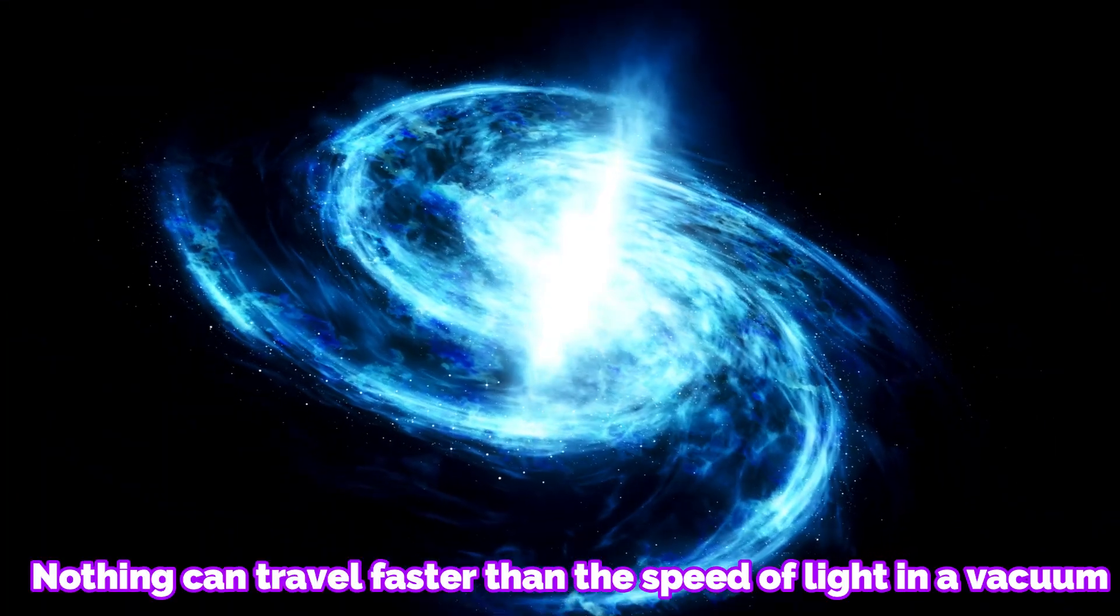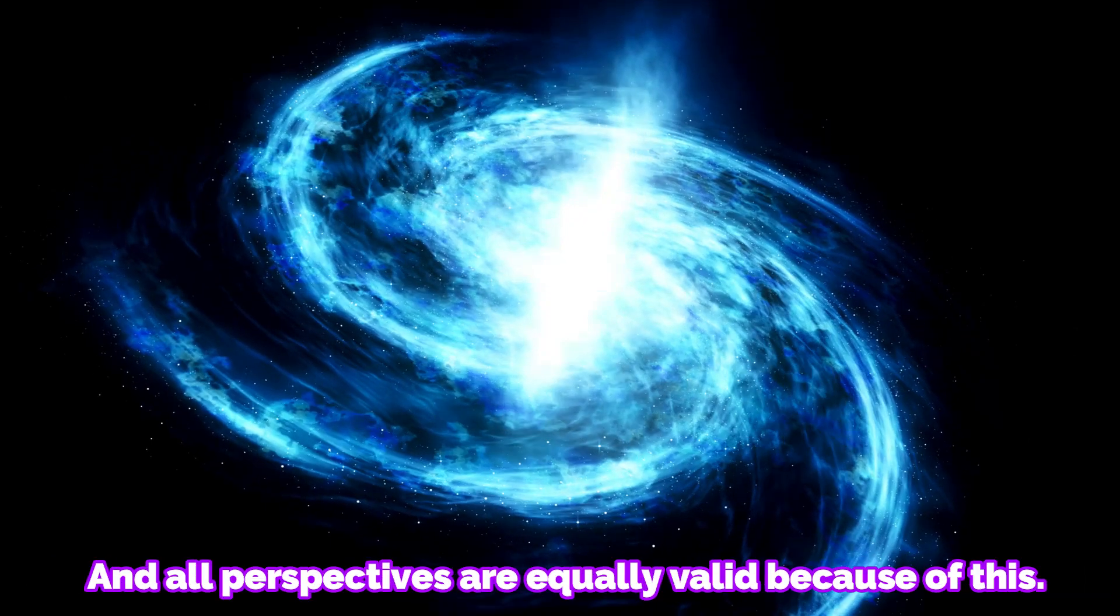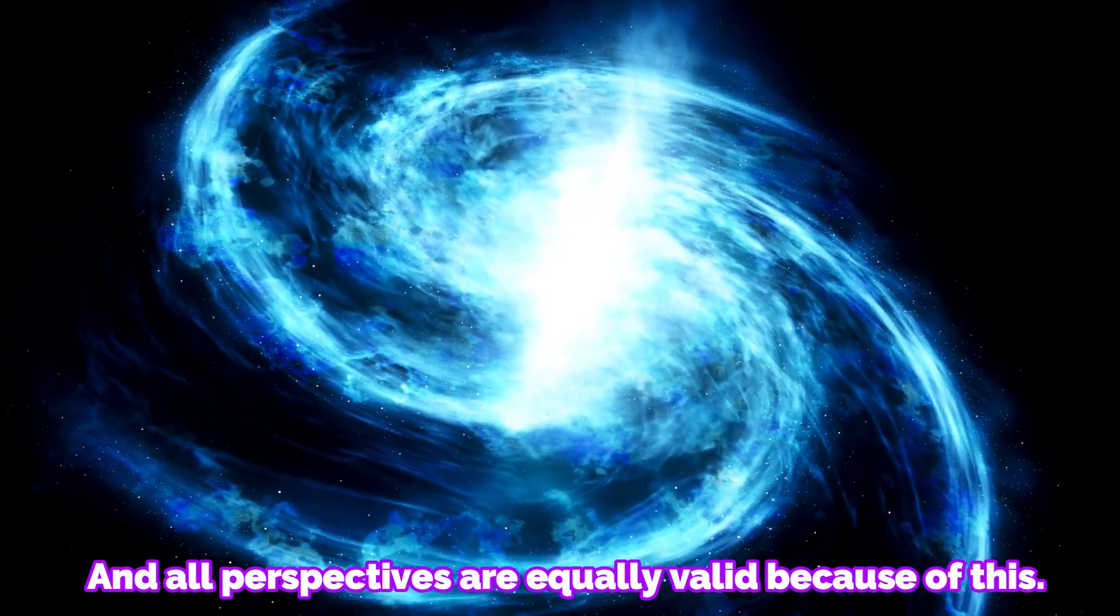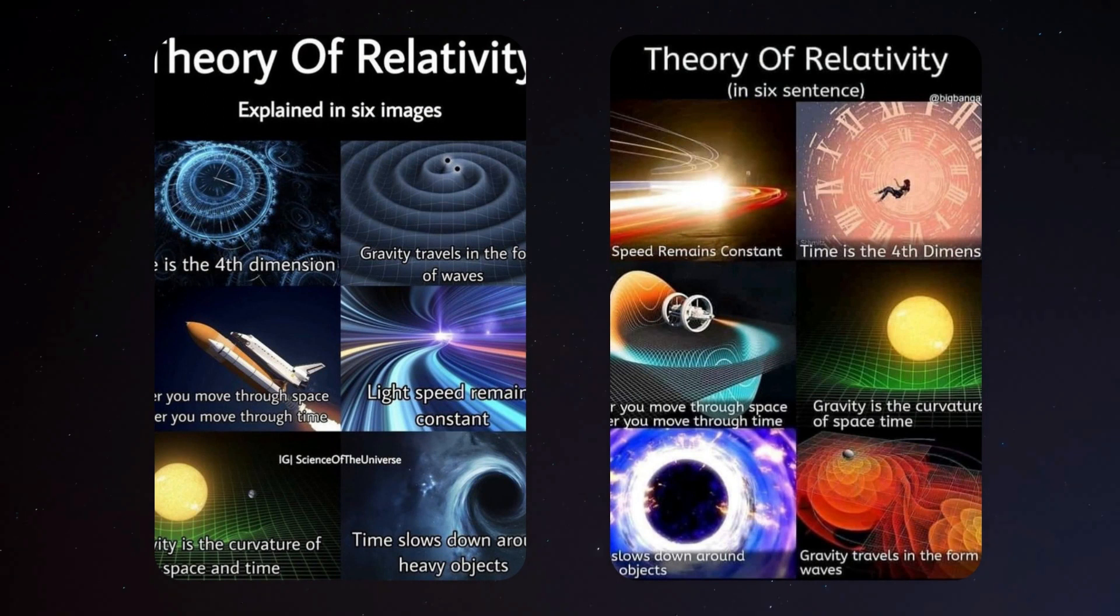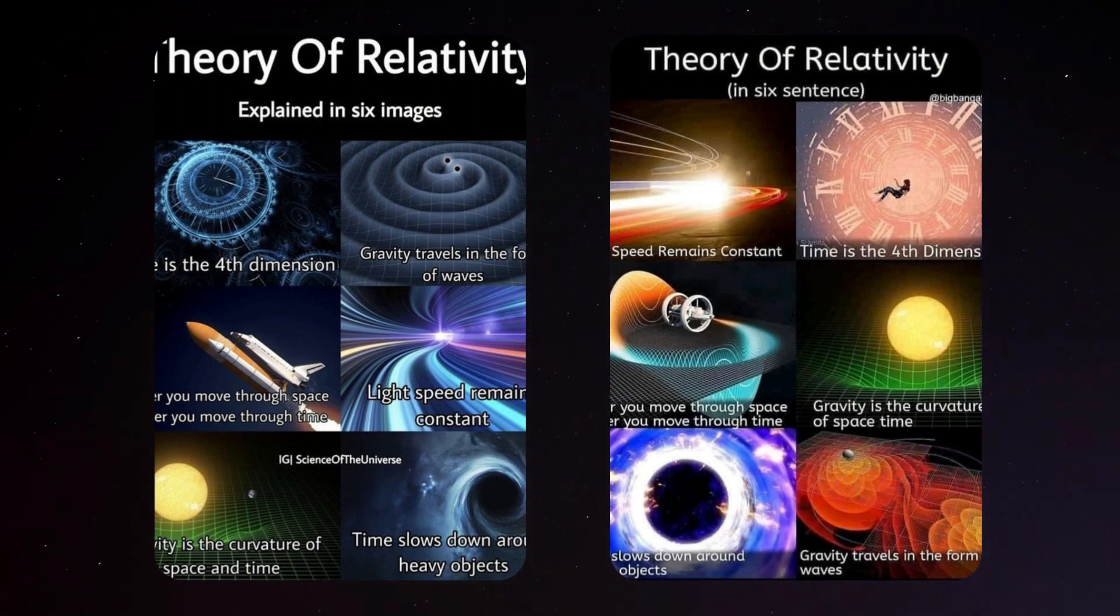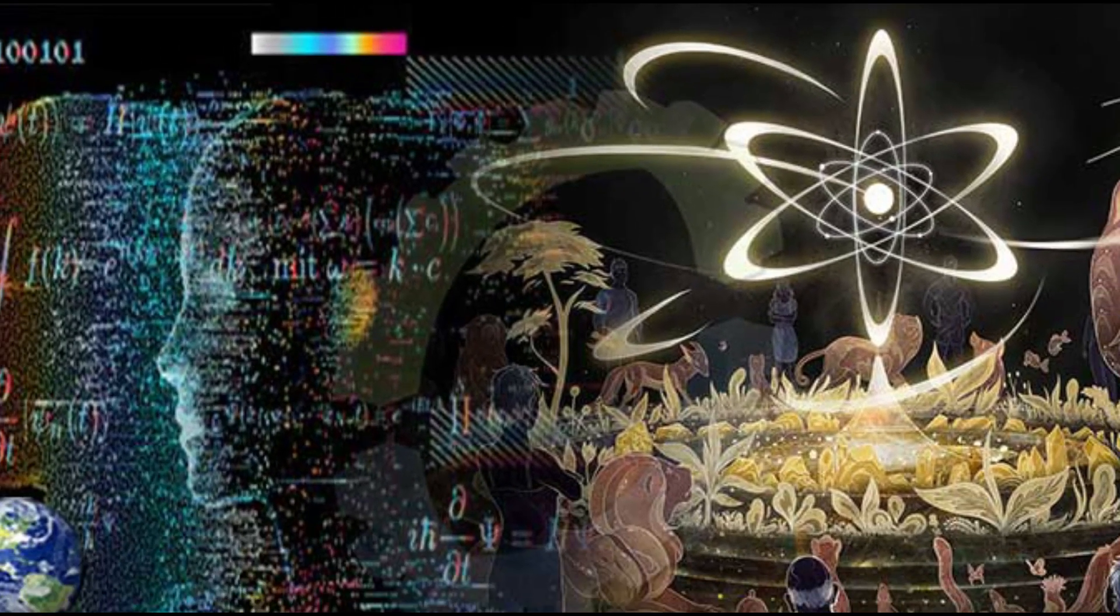It requires four assumptions on our part if we are to comprehend it. Nothing can travel faster than the speed of light in a vacuum. And all perspectives are equally valid because of this. Because of that idea, Einstein was able to develop his theory of special relativity. Furthermore, it is not necessary for there to be observers. Of course, since we are dealing with theoretical physics, we are talking about theoretical observers. Therefore, if another observer with a different point of view is possible, their perspective is just as valid as yours.